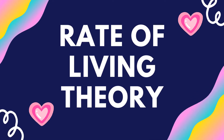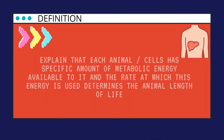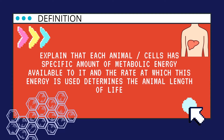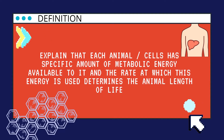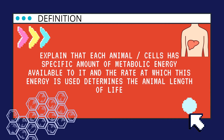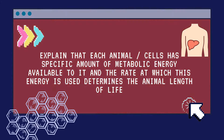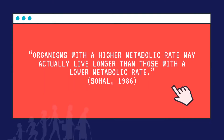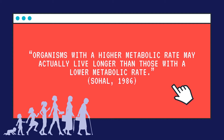Next is the rate of living theory. This theory explains that each animal or cell has a specific amount of metabolic energy available to it, and the rate at which this energy is used determines the length of life. The factors believed to control the length of life are metabolic potential and the rate of metabolism. According to Sohal (1986), organisms with a higher metabolic rate may actually live longer than those with a lower metabolic rate.